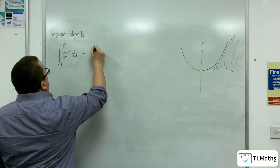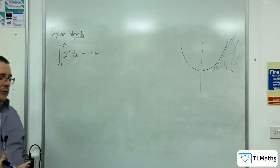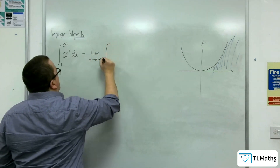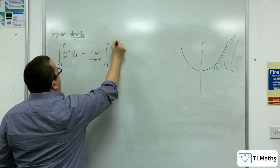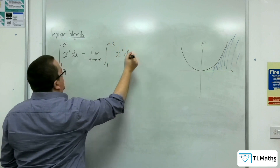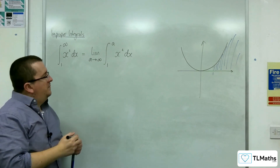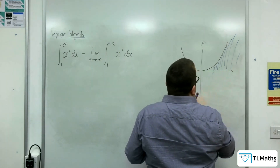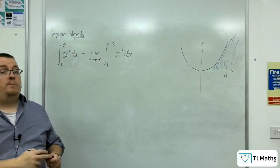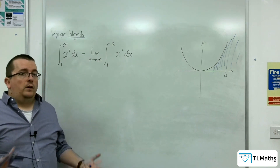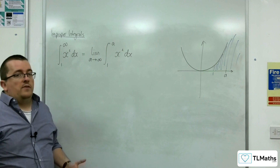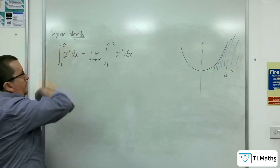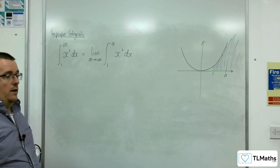That structure is using a limit. I'm going to write the limit and introduce the letter a, saying a tends to infinity, and look at the integral between 1 and a of x squared. The idea is: I'm now integrating between 1 and a, and I'll let a get bigger and bigger and see what happens to the area in question. This allows me to circumvent substituting infinity in as a number — which I can't do — but I can substitute a in.